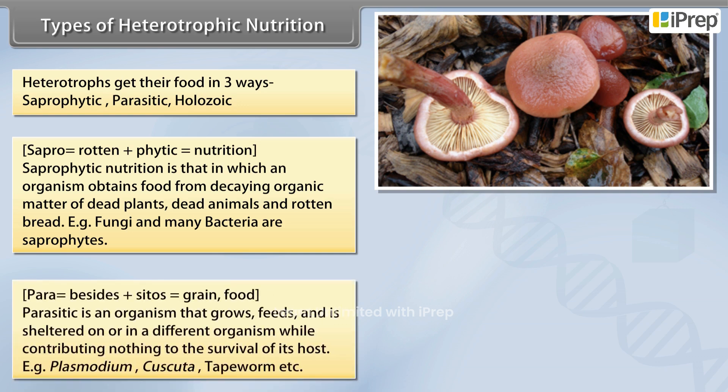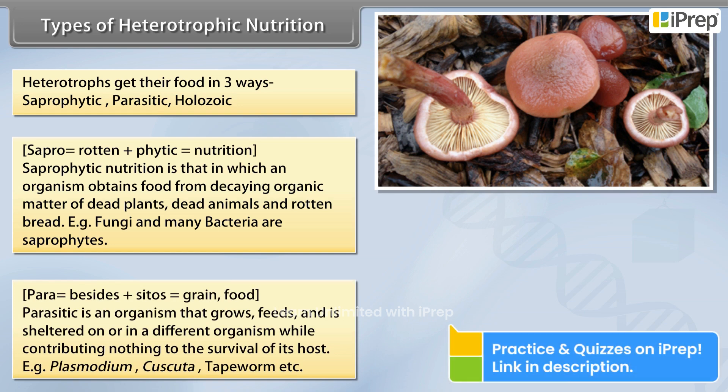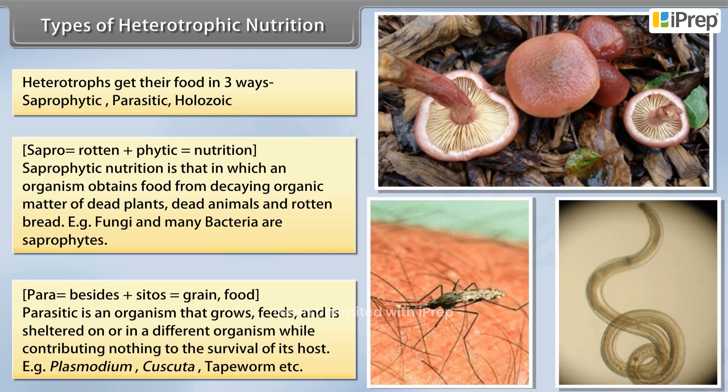'Para' means besides and 'cytos' means grain food. A parasite is an organism that grows, feeds, and is sheltered on or in a different organism while contributing nothing to the survival of its host. Examples include Plasmodium, Cascata, and tapeworm.